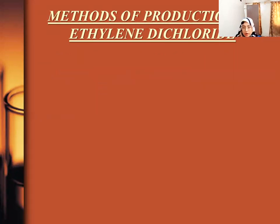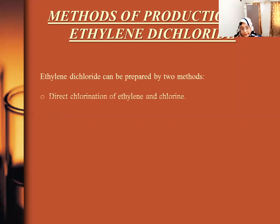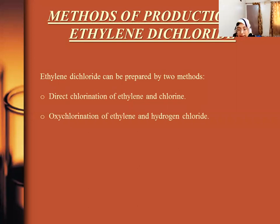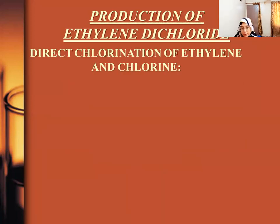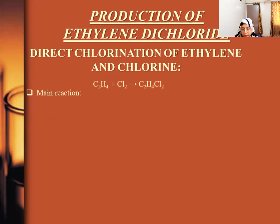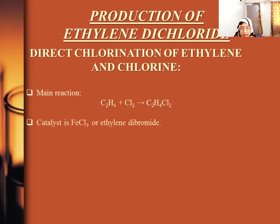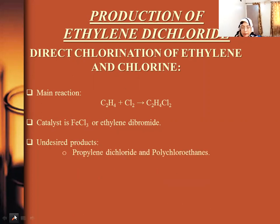Ethylene dichloride can be prepared by two methods: direct chlorination of ethylene and chlorine, and oxychlorination of ethylene and hydrogen chloride. In the direct chlorination method, ethylene reacts with chlorine to form ethylene dichloride. The catalyst is FeCl₃ or ethylene dibromide. The undesired products formed are propylene dichloride and polychloroethanes.